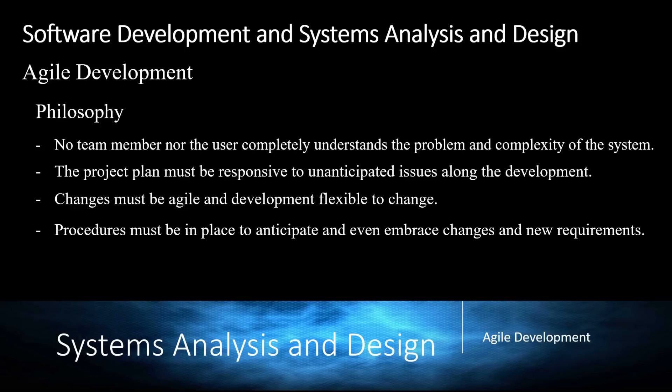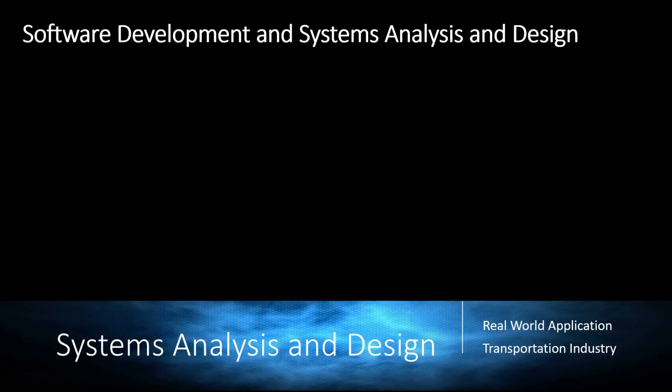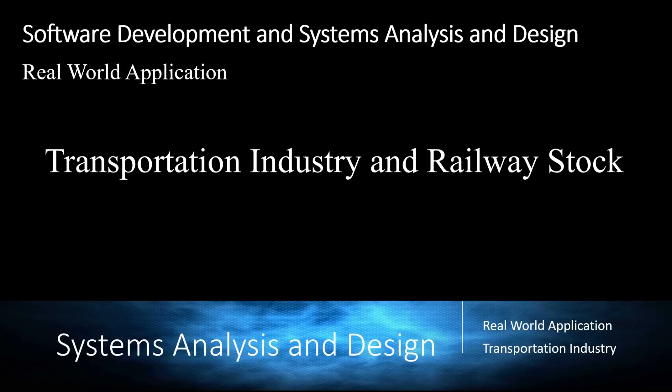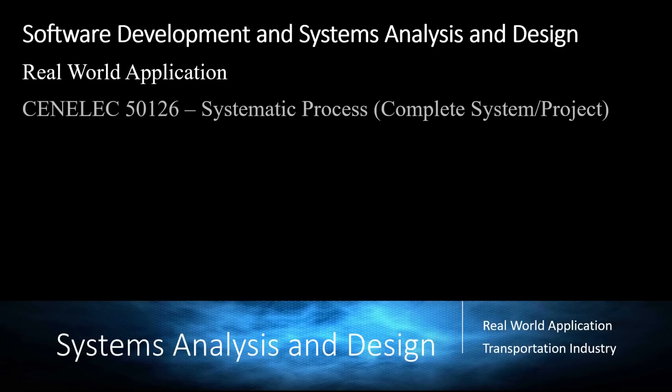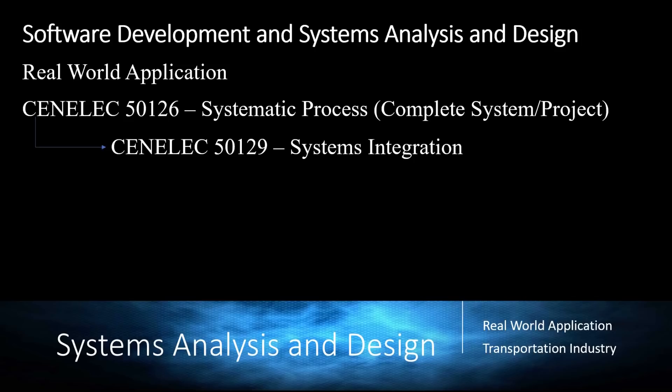For a real-world application, let's talk about the transportation industry and railway rolling stock. In railway rolling stock, we use something called Cenelec 5126, which is a systematic process for the complete system or project. It oversees all the requirements and all the steps needed in software development, and contains Cenelec 5129, which covers system integration.